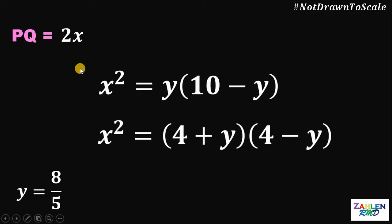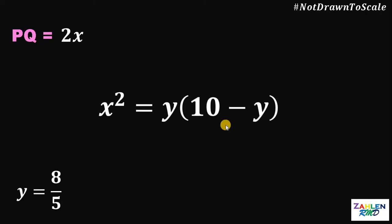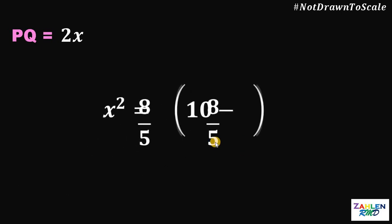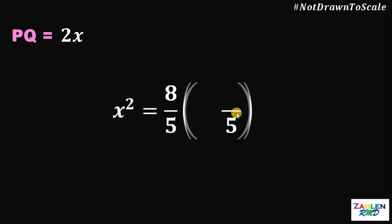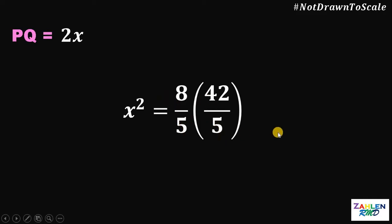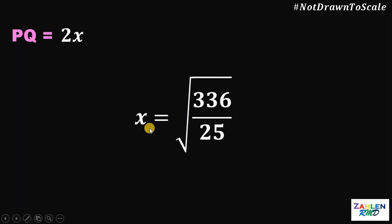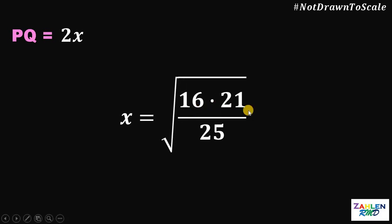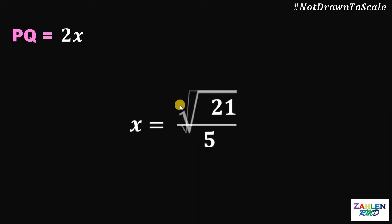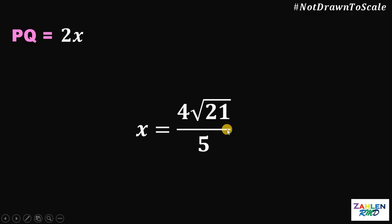Now that we have y equals 8/5, let's use the first equation to find x. Substituting, 10 minus 8/5 gives 42/5, and 8/5 times 42/5 gives 336/25. Taking the positive square root, since x is a length: x equals the square root of 336/25. Since 336 equals 16 times 21, and both 16 and 25 are perfect squares, this simplifies to x equals (4/5) times the square root of 21.